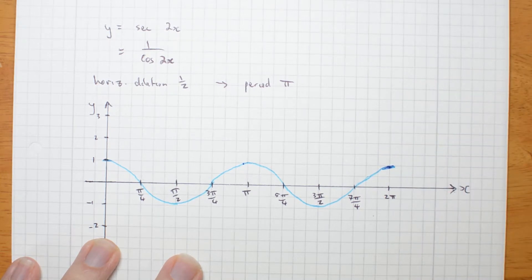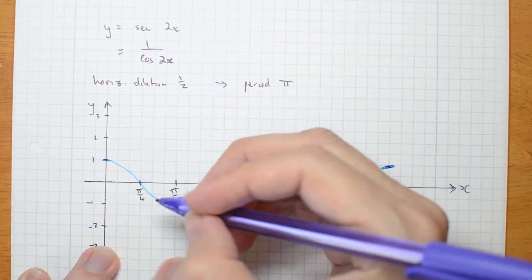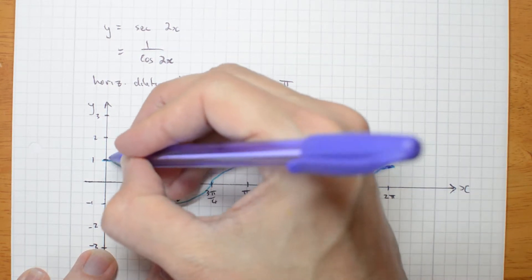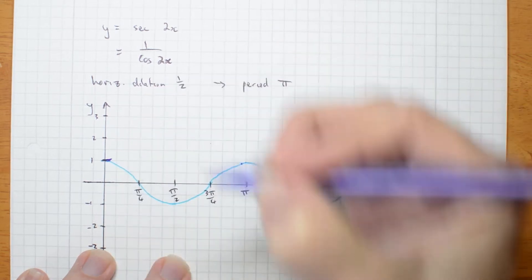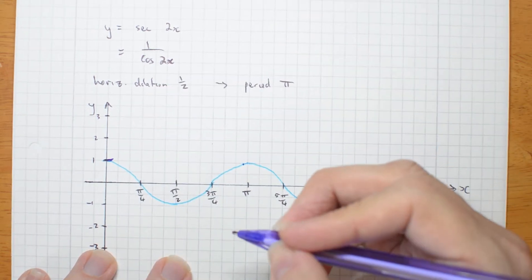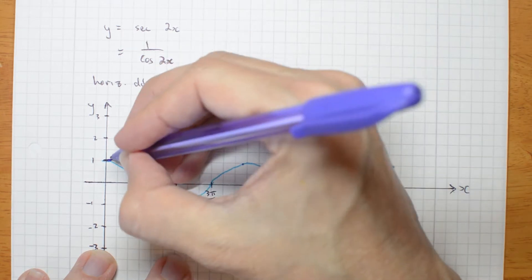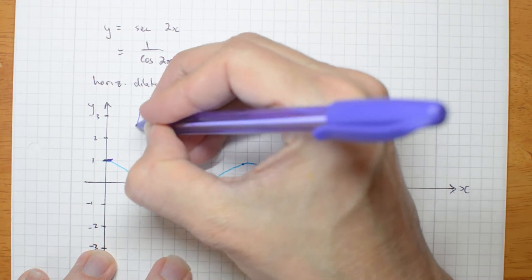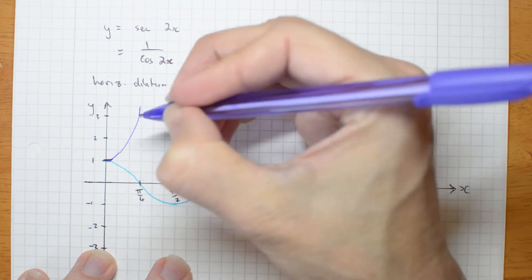Now the graph I actually want looks like this, sec. So it's the reciprocal. Where the original is 1, the reciprocal is also 1. Where the original is 0, my graph is going to have an asymptote. Sec is going to have an asymptote.